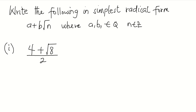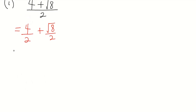Our first question is: 4 plus square root of 8, all divided by 2. We break it down and represent our solution as a plus b square root of n. The numerator 4 plus square root of 8 is divided by the denominator 2, which means 4 is divided by 2, and square root of 8 is also divided by 2. So 4 divided by 2 gives us 2, and we maintain square root of 8 divided by 2.